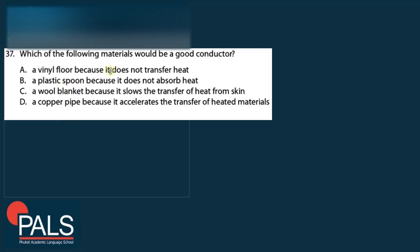Question 37: Which material would be a good conductor? A vinyl floor doesn't transfer heat — that's an insulator. A plastic spoon doesn't absorb heat — insulator. A wool blanket slows heat transfer from skin — insulator. A copper pipe accelerates the transfer of heated materials — that is a good conductor. A conductor quickly and easily transfers heat from one place to another. Options A, B, and C describe insulators; only D describes fast heat transfer. Correct answer is D.